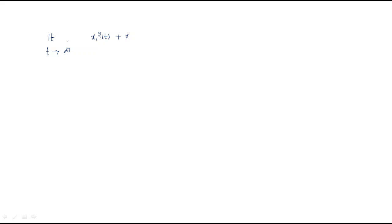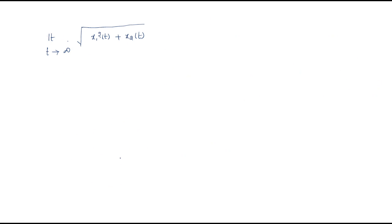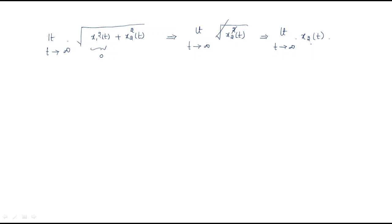We need limit t→∞ of √(x1(t)² + x2(t)²). Since x1(t) = 0, this simplifies to limit t→∞ of √(x2(t)²), which reduces to limit t→∞ of x2(t).